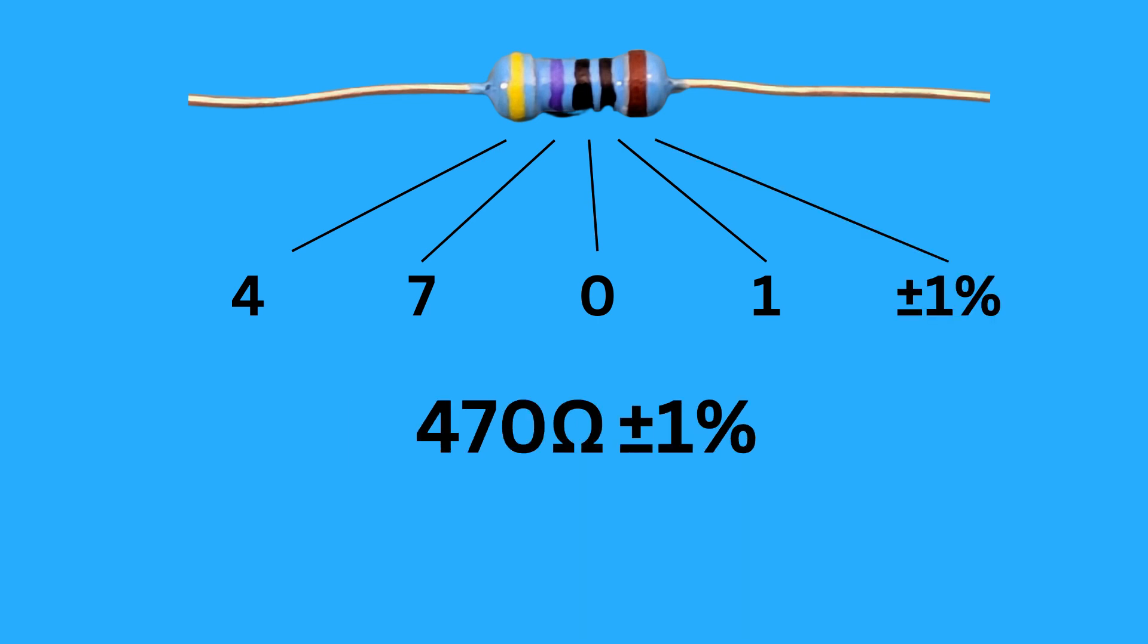Finally, the tolerance is plus and minus 1%. For this resistor, the value can range between 465.3 ohms and 474.7 ohms.